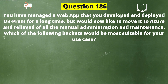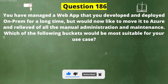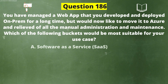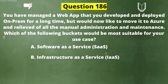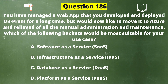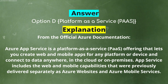Next question: You have managed a web app that you developed and deployed on-premises for a long time, but would now like to move it to Azure and be relieved of all the manual administration and maintenance. Which of the following would be most suitable for your use case? The options are: A) Software as a Service, B) Infrastructure as a Service, C) Database as a Service, D) Platform as a Service. The correct answer is option D: Platform as a Service.